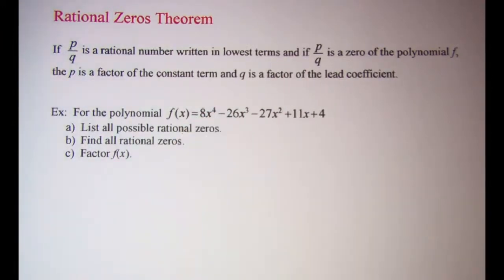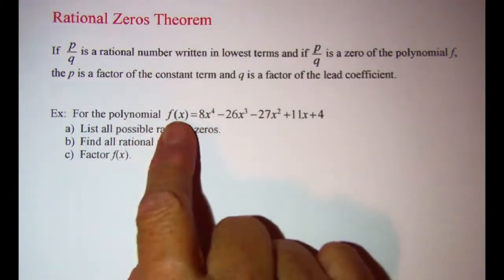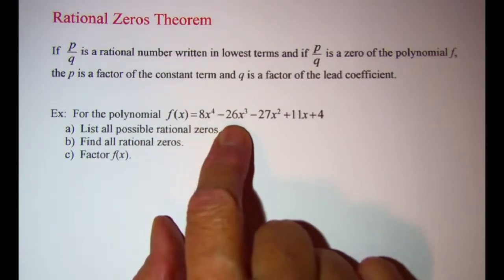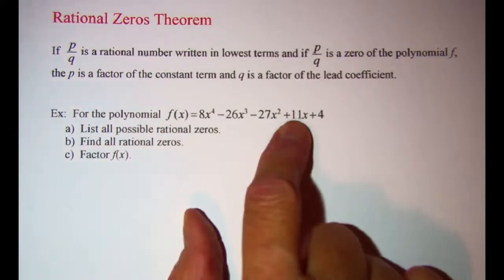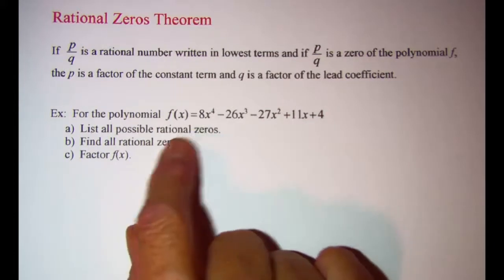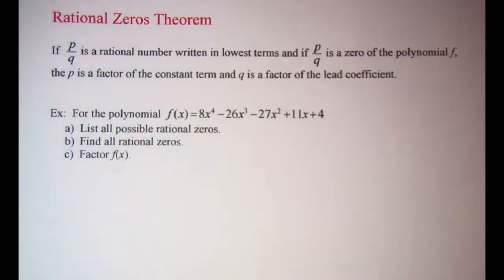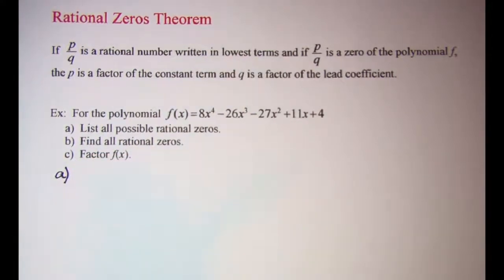In our example we're going to investigate the function f(x) = 8x⁴ - 26x³ - 27x² + 11x + 4, and we're asked to do a number of things. The first thing we want to do is list the possible rational zeros using the rational zeros theorem.